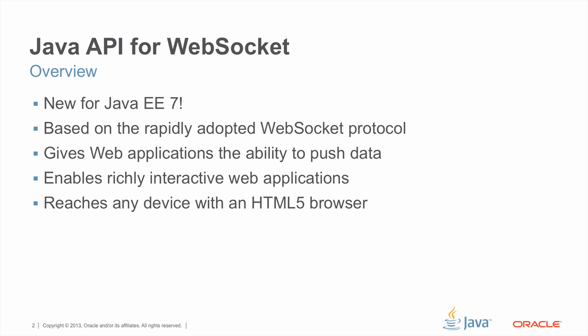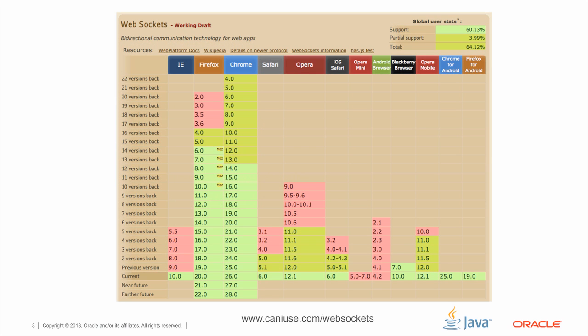The WebSocket protocol is part of the larger HTML5 standard, so any web application that you create using the Java API for WebSocket can reach any device — whether it be desktop, tablet, or smartphone — that has an HTML5-enabled browser. There's a very useful website called caniuse.com which tracks the support of the WebSocket protocol in all the major browsers. If you look down the left-hand side, the current versions of all the major browsers support WebSocket.